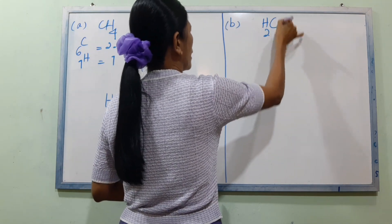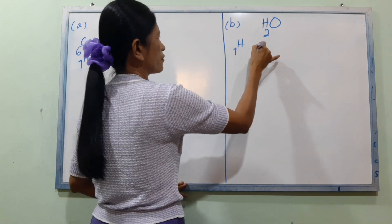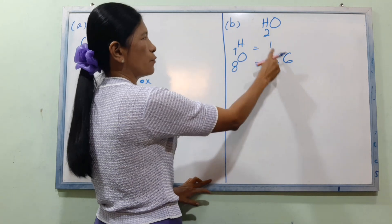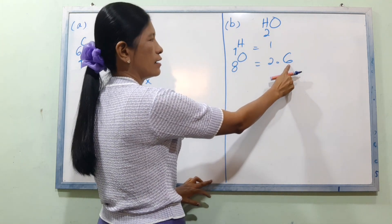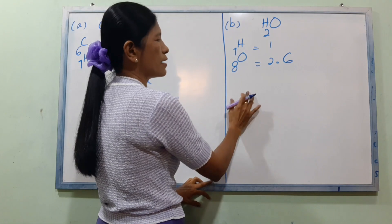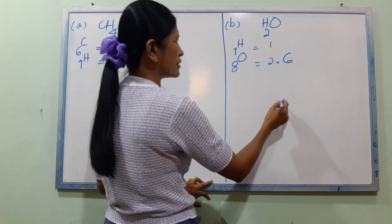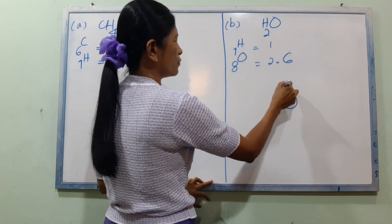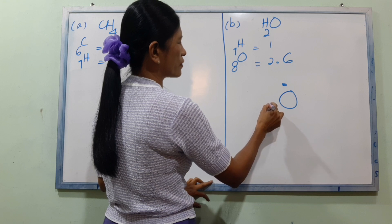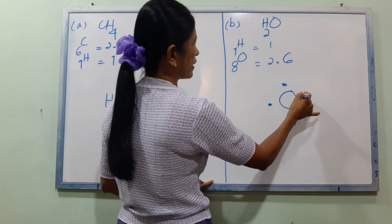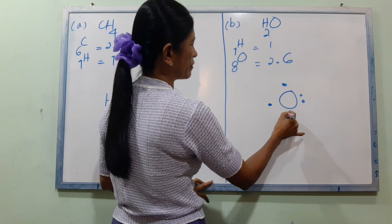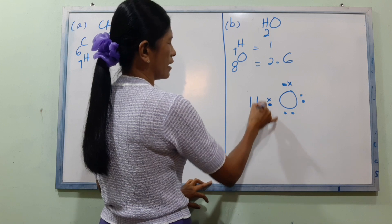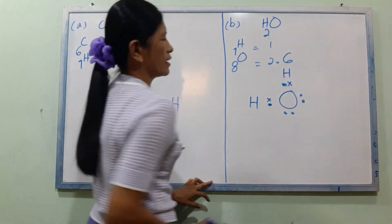H₂O is H₂O. For H₂O, hydrogen: the electron count is 6 for oxygen. Hydrogen is more clear — H₂O has 6 electrons on oxygen. H₂O has 6.